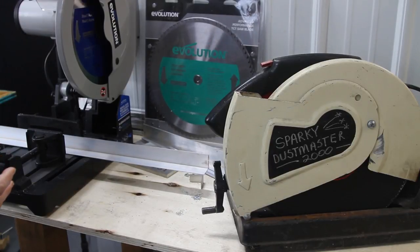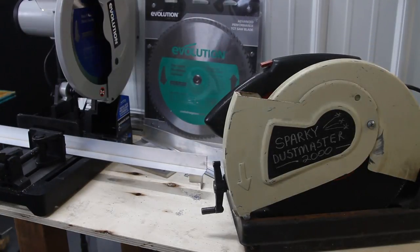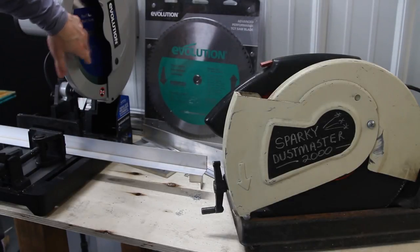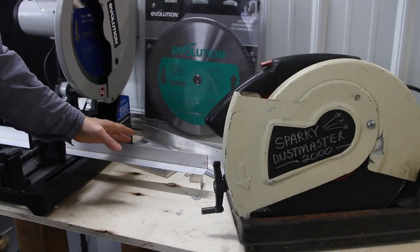So I started researching these dry cut saws and I went with the Evolution tools. I'm going to cover the differences between the steel blade and the aluminum blade regarding cutting aluminum.